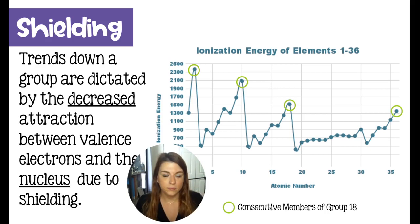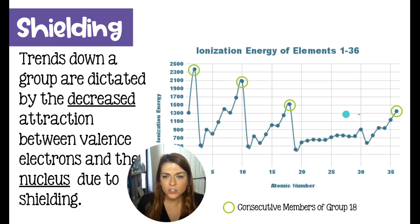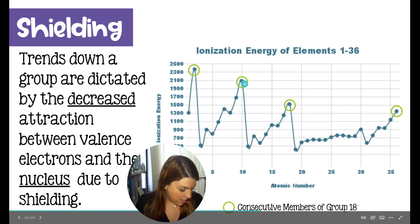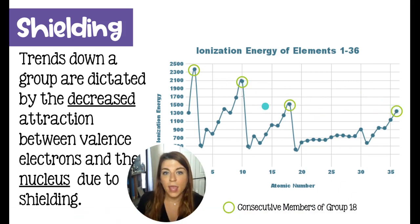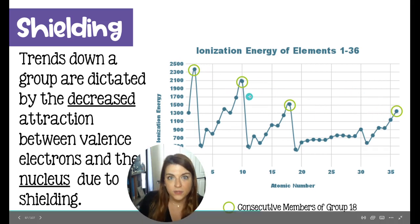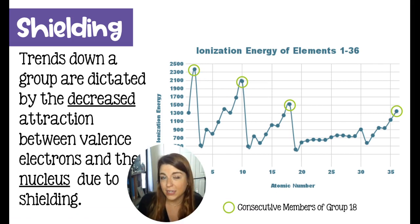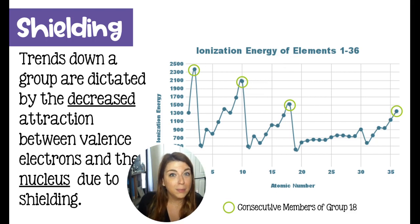Metallic character is not really quantified, so we're going to focus on ionization energy and electronegativity. On this graph, you can see consecutive members of group 18 — helium, neon, argon, and krypton — and their ionization energies are decreasing. That is because helium's valence electrons are very close and highly attracted to the nucleus, so it takes a lot of energy to pull them away. Neon's electrons are a little further away with some repulsive forces, so it's a little easier to remove neon's electrons.